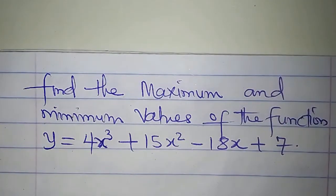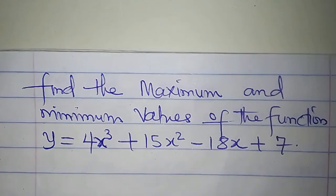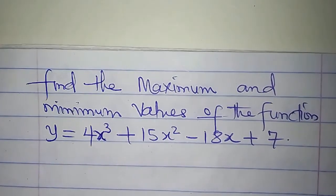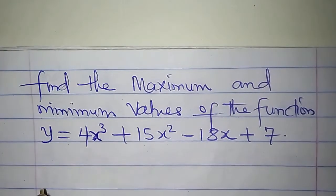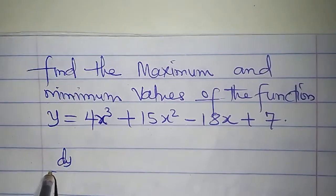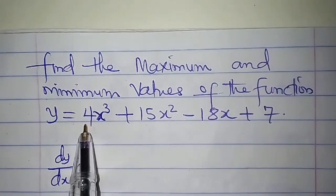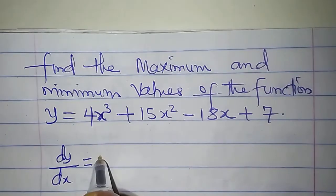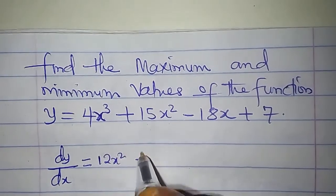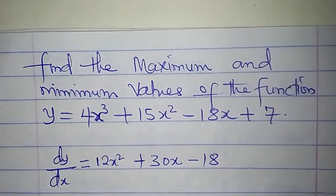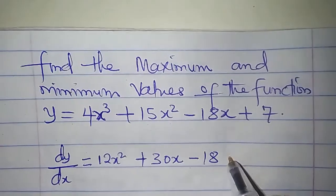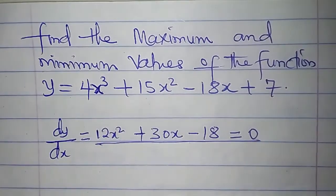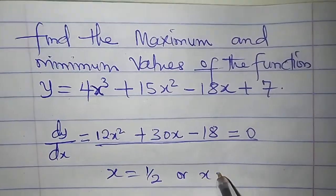Find the maximum and minimum values of y = 4x³ + 15x² - 18x + 7. The first thing is to determine the gradient function dy/dx. The gradient is 12x² + 30x - 18. Setting this to zero and solving the resulting quadratic equation, we get x = 1/2 or x = -3. These are the stationary points. Dividing through by 6 gives 2x² + 5x - 3 = 0 — same result.